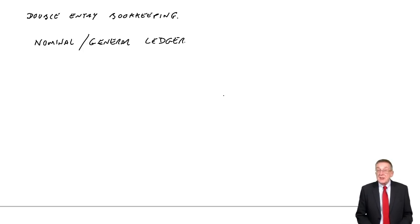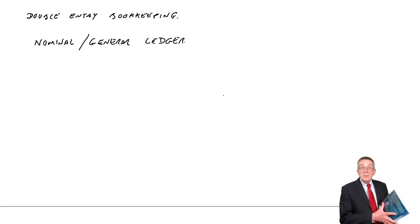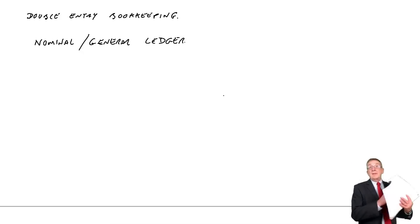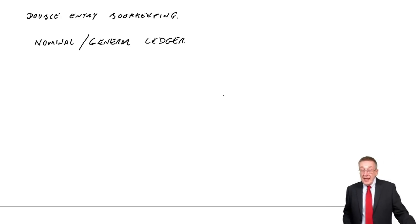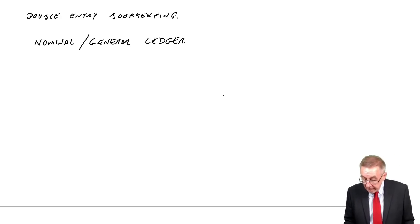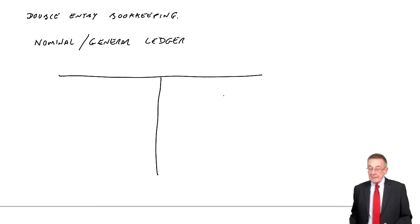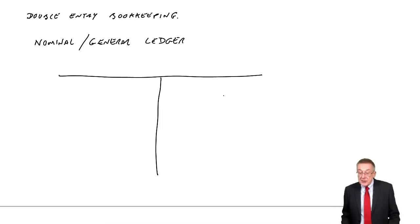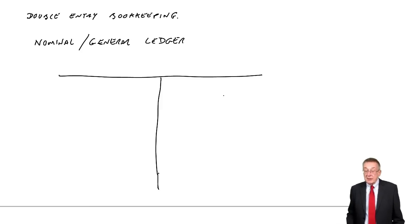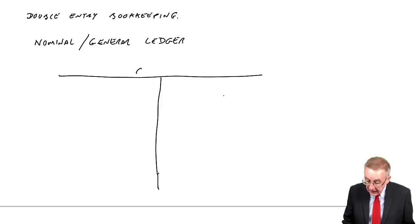I want to make a record, first of all, that the business has now got cash of £5,000. I'll open this book, and whenever we open a book, we've got two pages facing us. We tend to draw it as a T — a T account — but that's representing two pages of a book. I'm going to use these two pages to record how much cash we've got, and we call it the cash account.